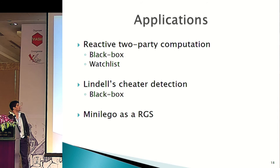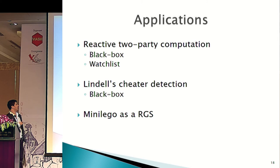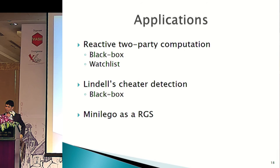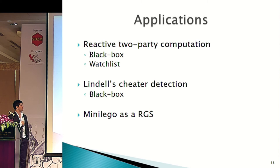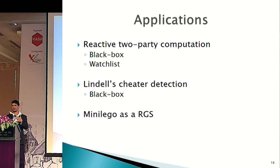What are the applications of reactive garbling schemes? You have reactive two-party computation — it's black box, so it only relies on reactive garbling schemes and not on their implementation. It's going to use the watch list. We also have Lindell's cheater detection — a technique Lindell used to reduce the number of circuits you need to communicate, where the second player, if he learns the first player cheated, is able to extract his input. We can model this using reactive garbling schemes in a black box fashion. We can also look at mini-LEGO as a type of reactive garbling scheme, because mini-LEGO's soldering is, in our language, linking garbled functions together.